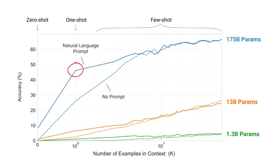As you can see, when the 175 billion parameter large language model is given one example in context, its performance on unseen tasks increased dramatically, even more so when the prompt is given with natural language.